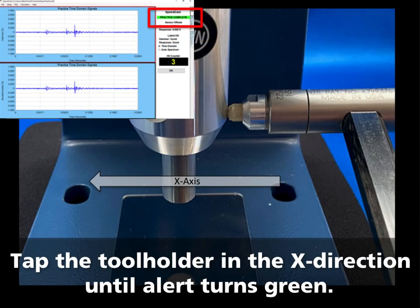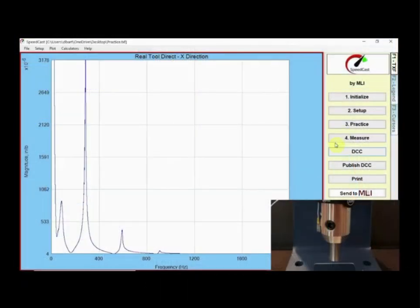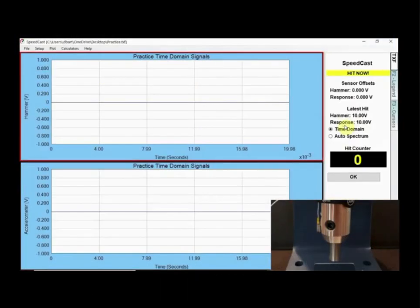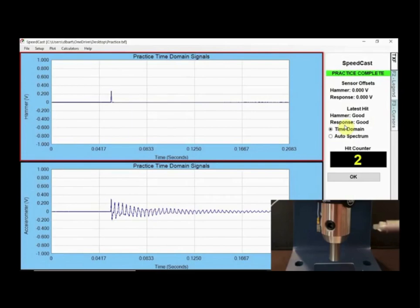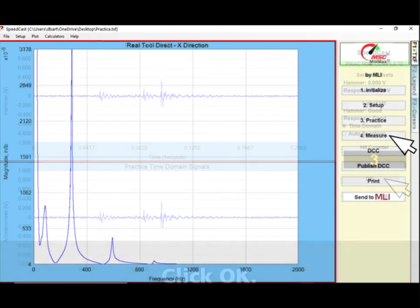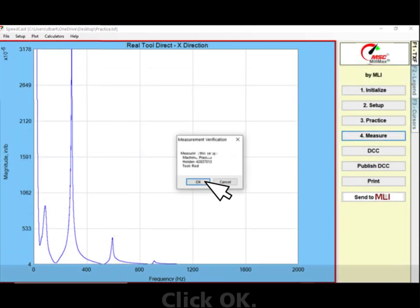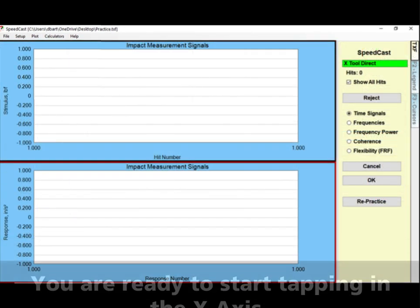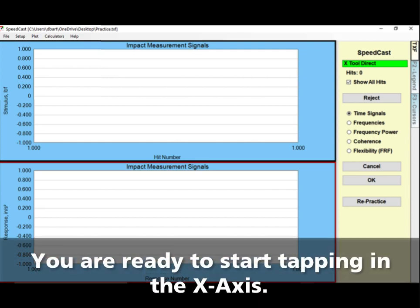Tap the tool holder in the x-direction until the practice complete alert turns green. Here is a demonstration. Click OK. Click the measure button. You are ready to start tapping in the x-axis.